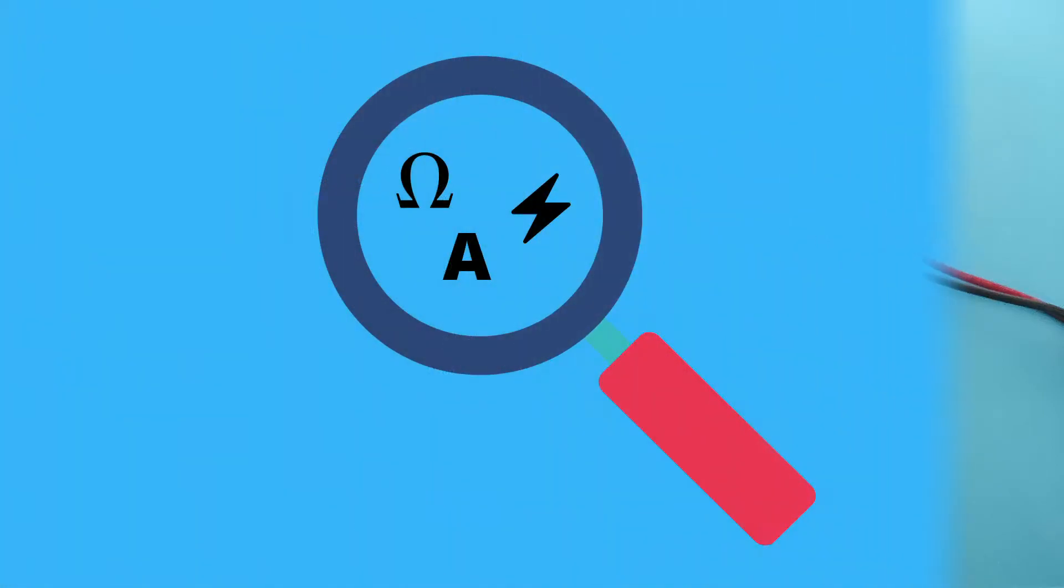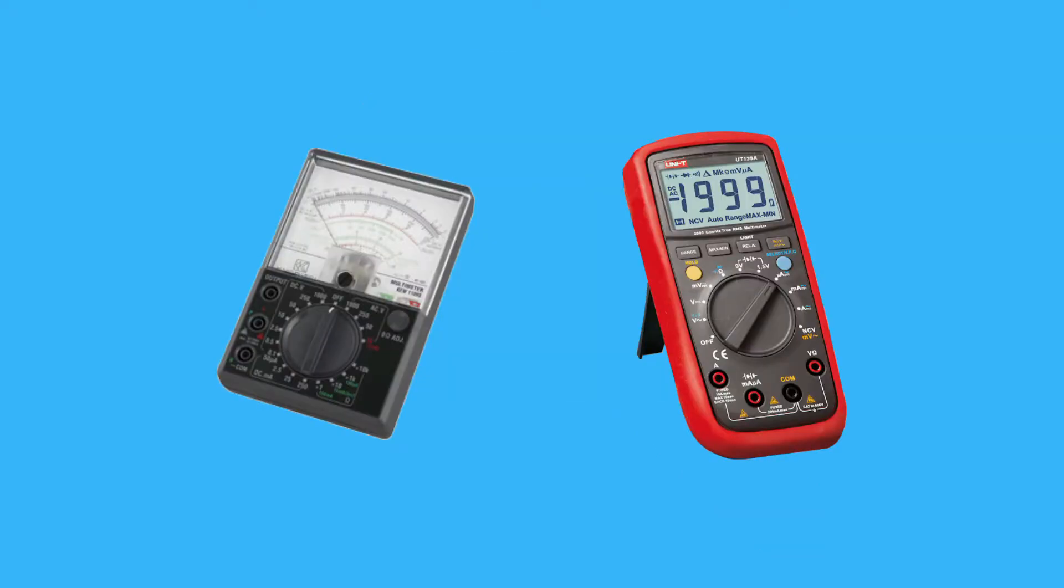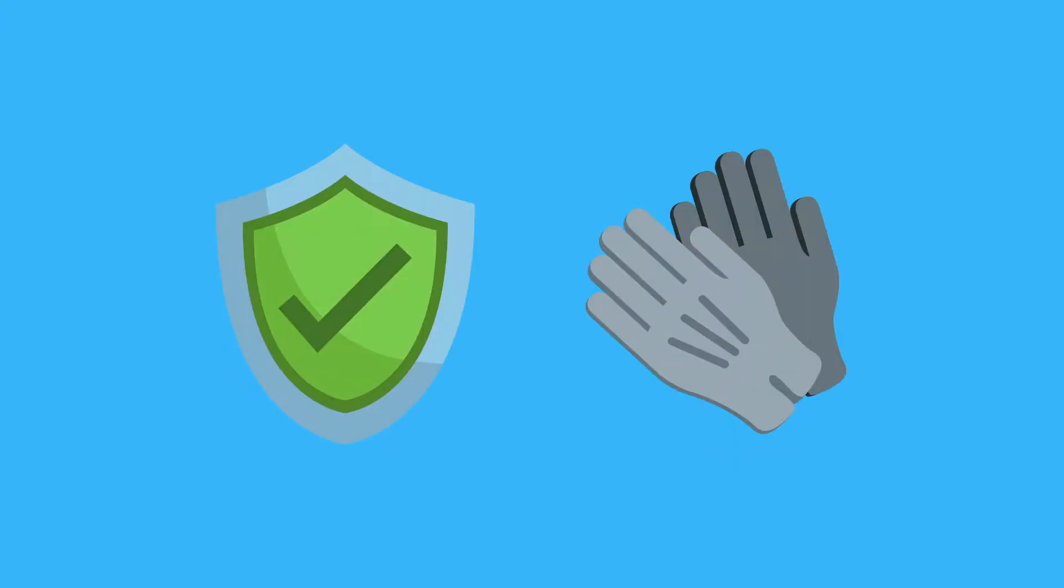There are two types of multimeter: analog and digital. Before you start using multimeters, I highly recommend that you use insulating gloves. Safety always comes first. In the description you can find a link about insulating gloves.